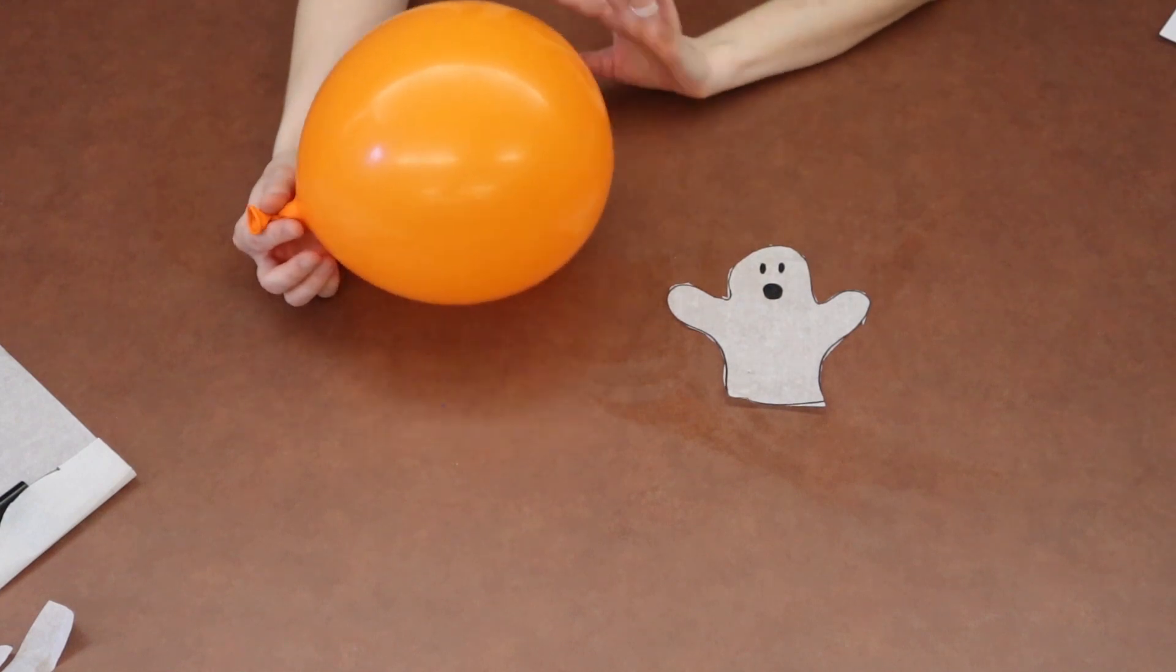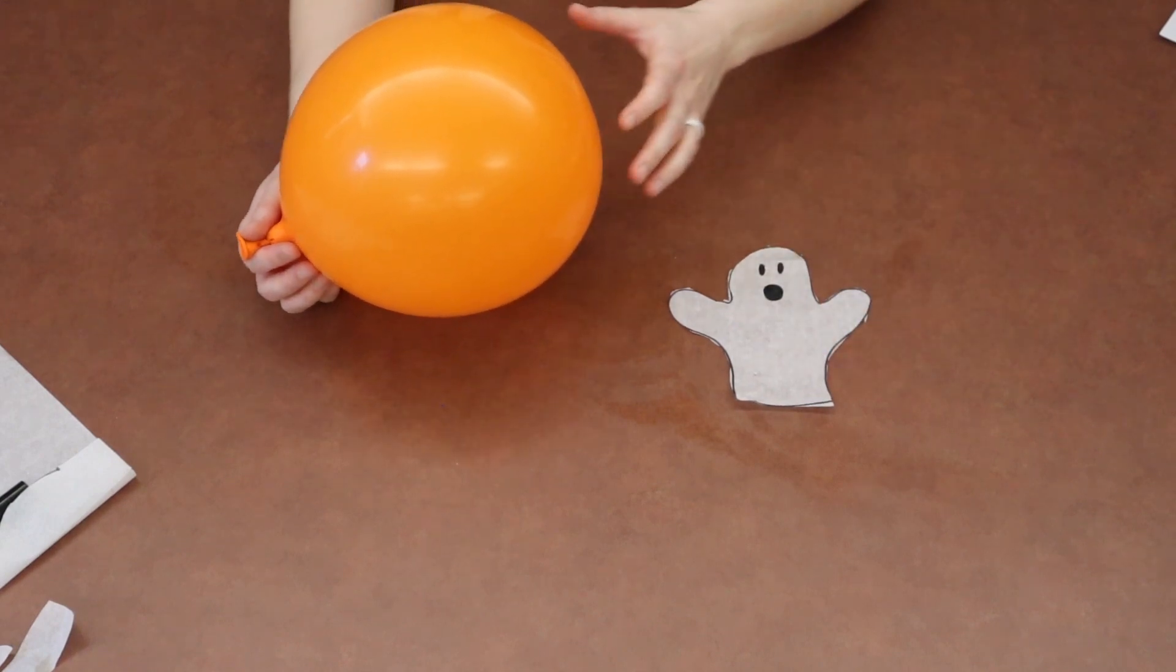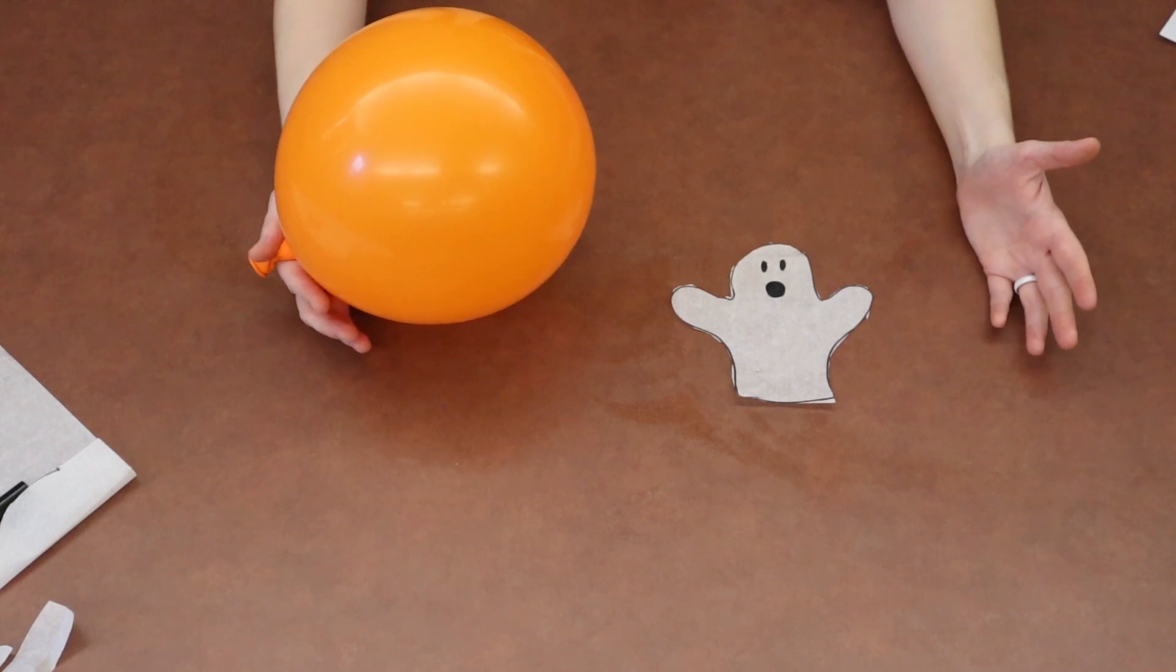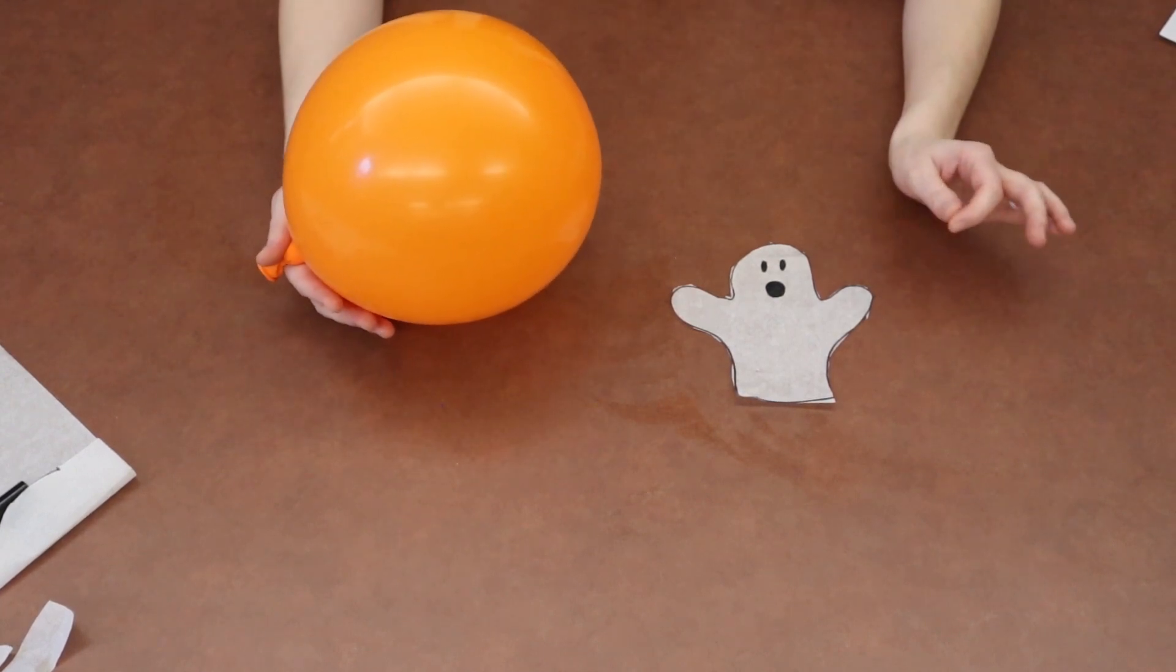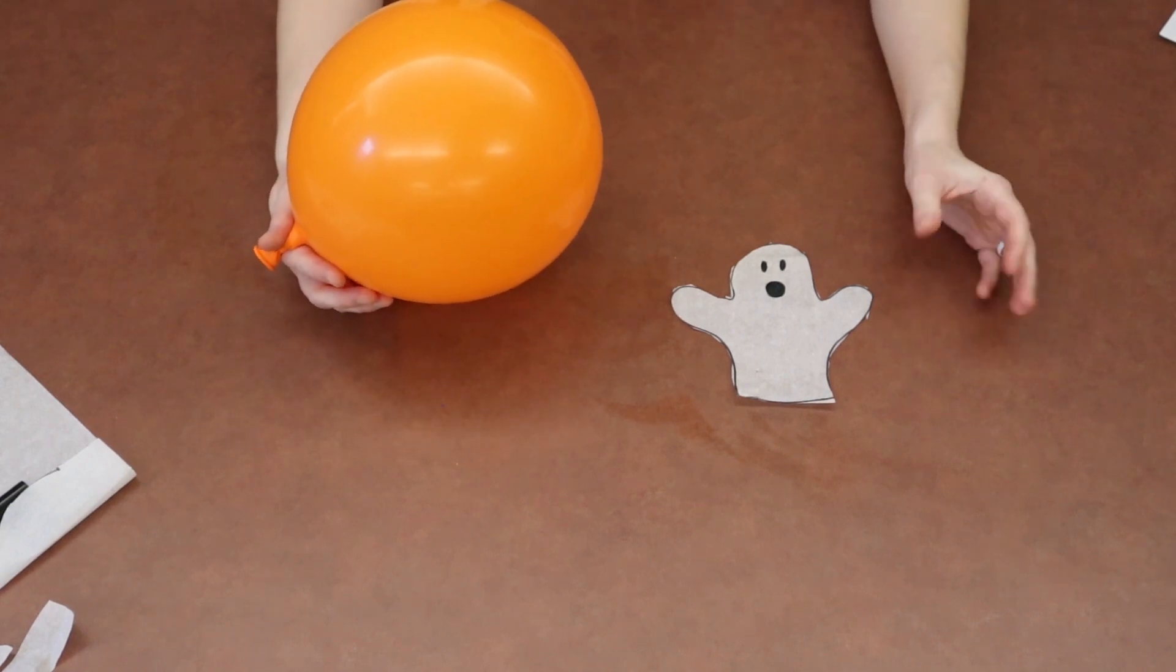Without it, we would not be able to get our ghosts dancing in a minute here. So what it is, is all things on our planet are made up of something called an atom. And inside an atom, there is something called an electron.